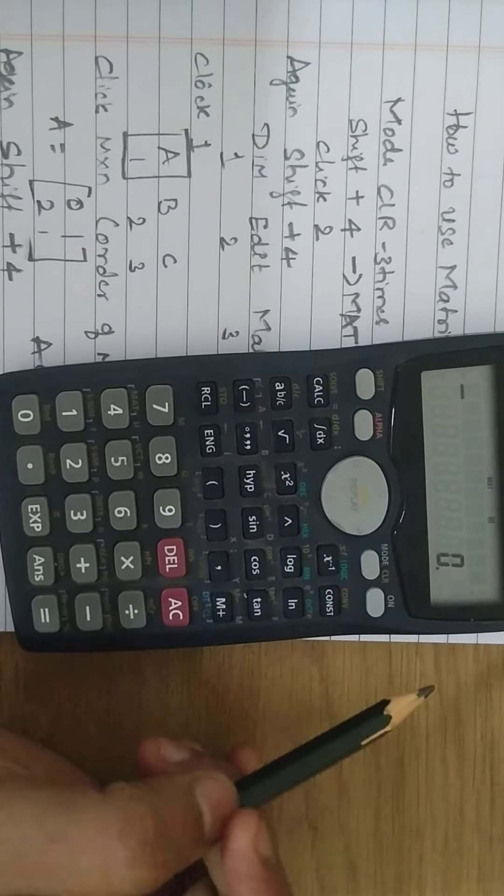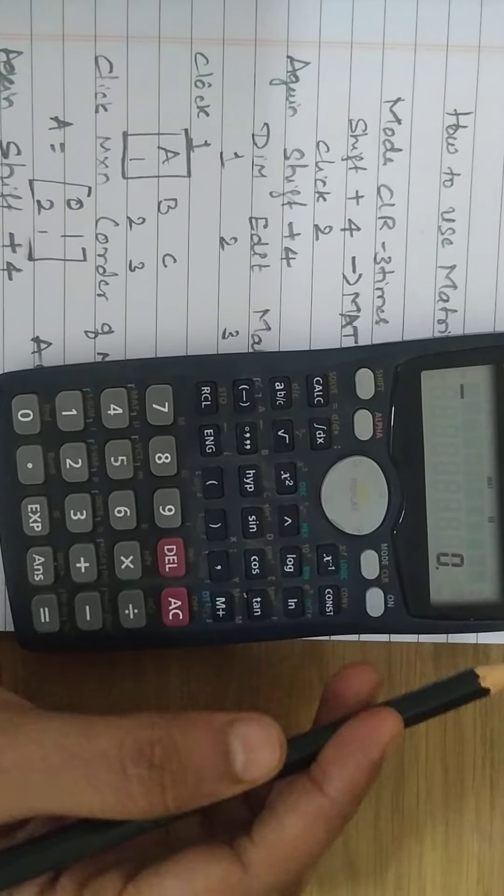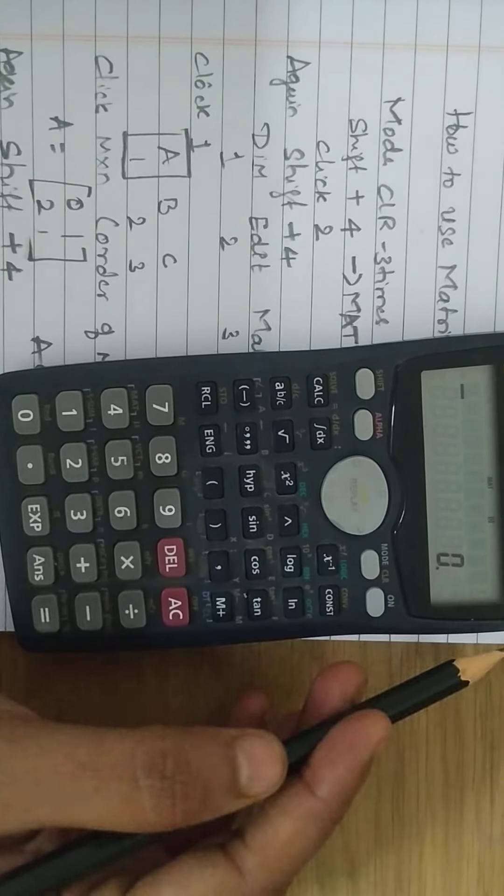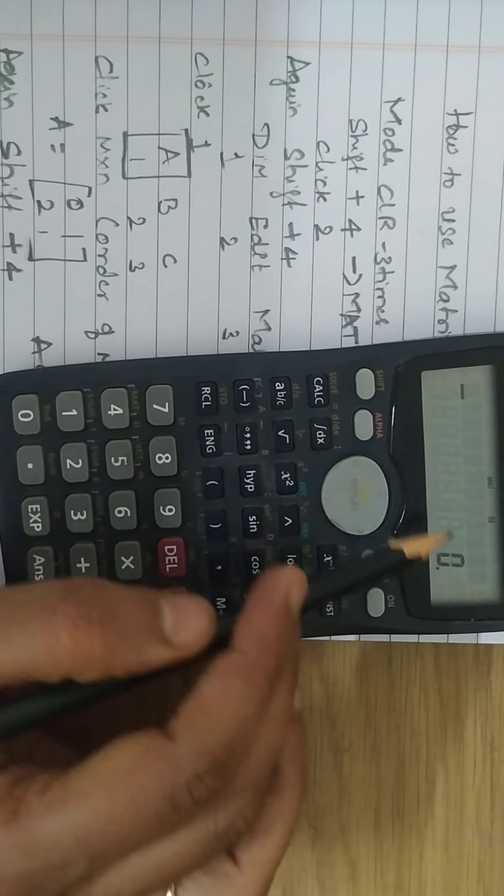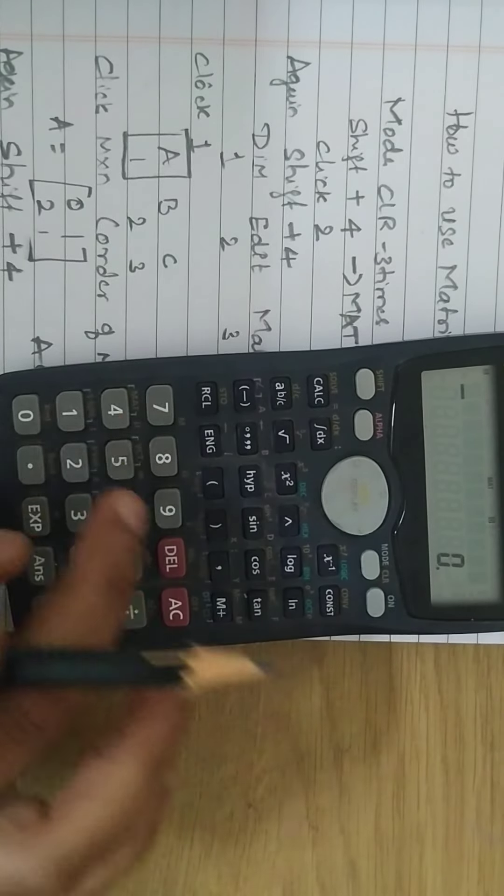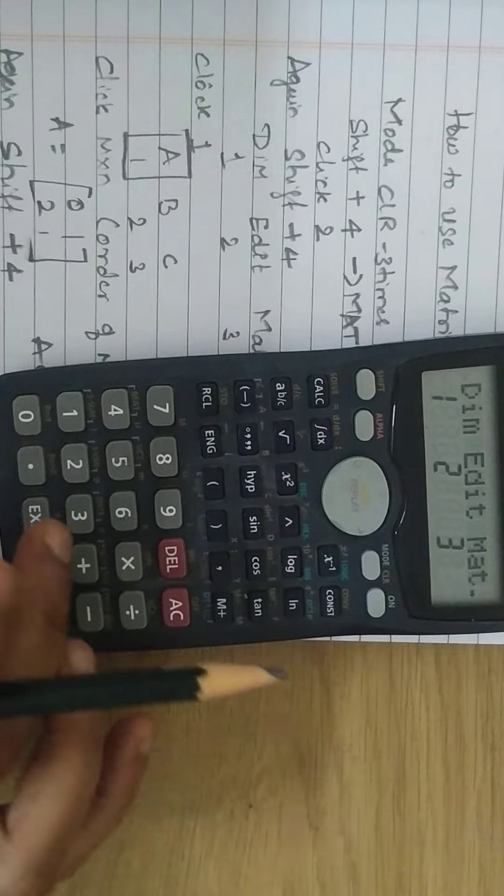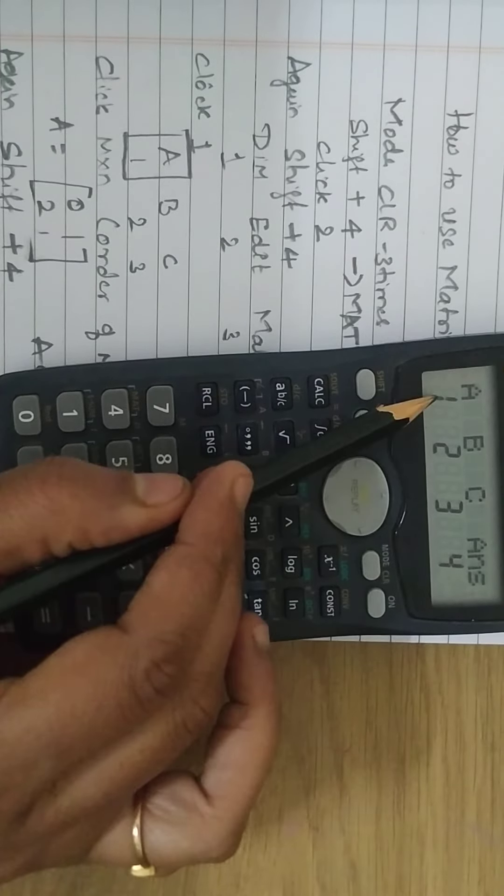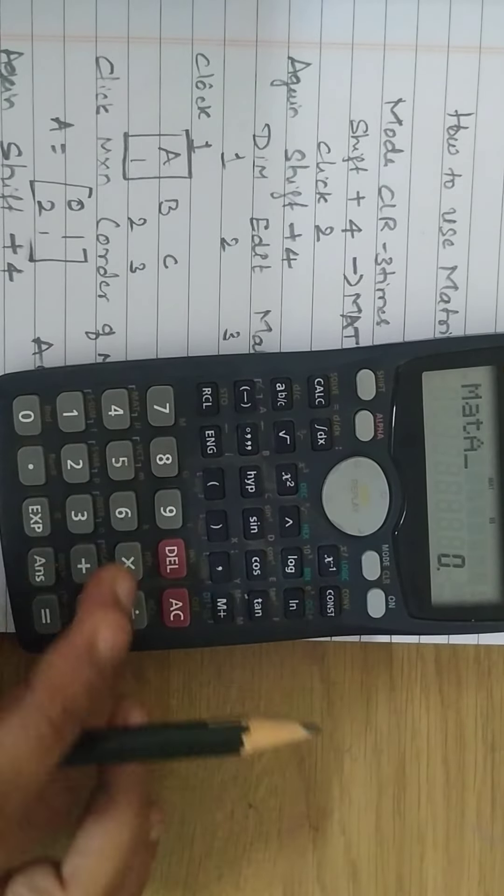Matrix A and matrix B are entered. Similarly you can go for matrix C. Now I want to find the product of the matrices. Again shift 4, go to math function 3, take matrix A. We need the product, so multiply.